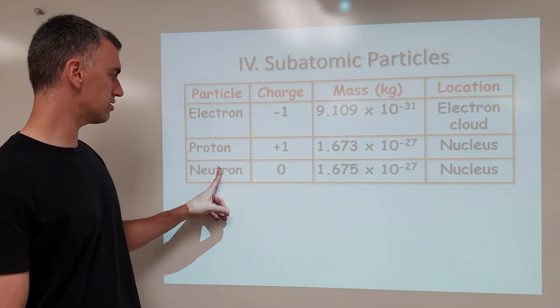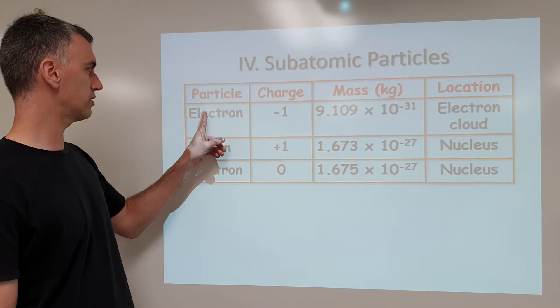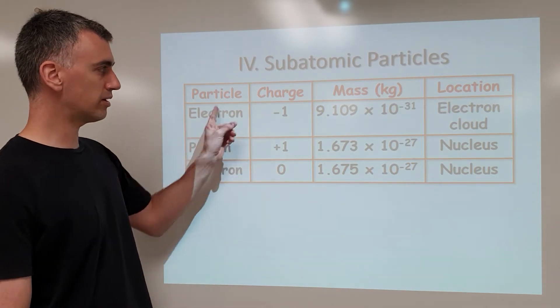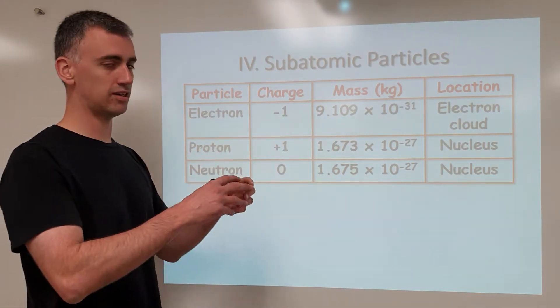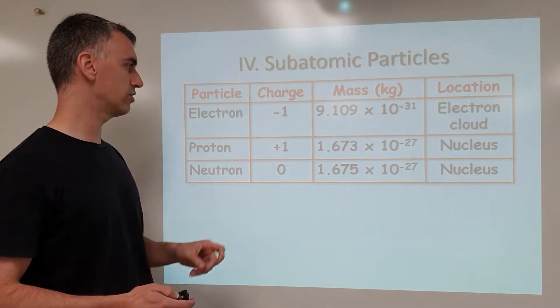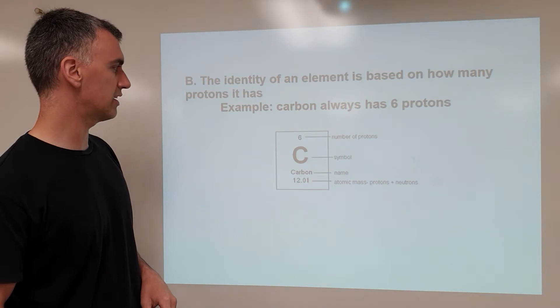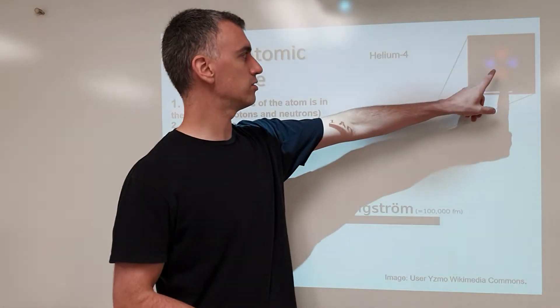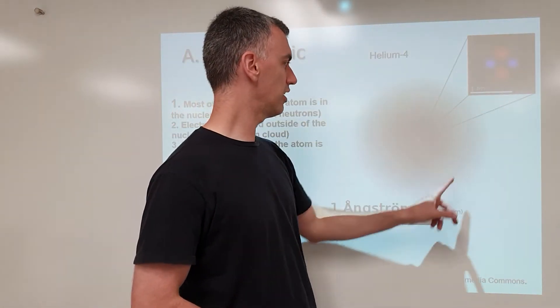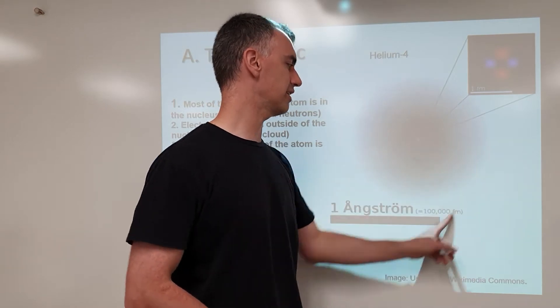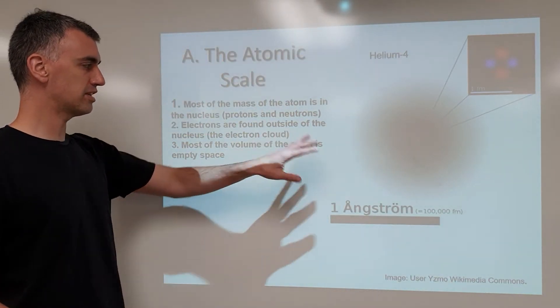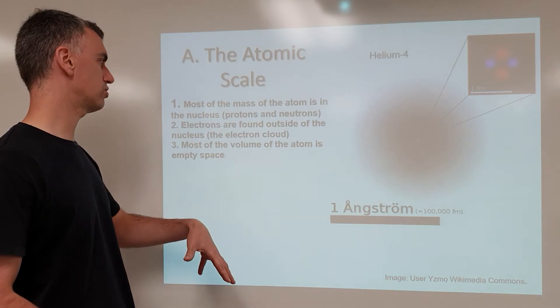Beware of the charges: neutron is neutral, proton has a charge of plus one, electron minus one, and beware of their location, where the electrons are located on the outside of the atom and the proton and neutron are in the nucleus. Electrons are negative, protons are positive, and neutrons are neutral.